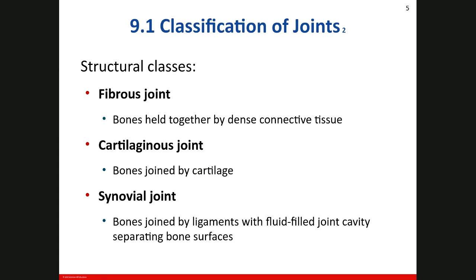The structural classification of joints lists three types. The first is the fibrous joint, which has no joint cavity and occurs where bones are held together by dense regular connective tissue. The second is the cartilaginous joint, which also has no joint cavity and occurs where bones are joined by cartilage. The third is the synovial joint, which has a fluid-filled joint cavity that separates the articulating surfaces. The articulating surfaces are enclosed within a connective tissue capsule and the bones are attached to each other by various ligaments.